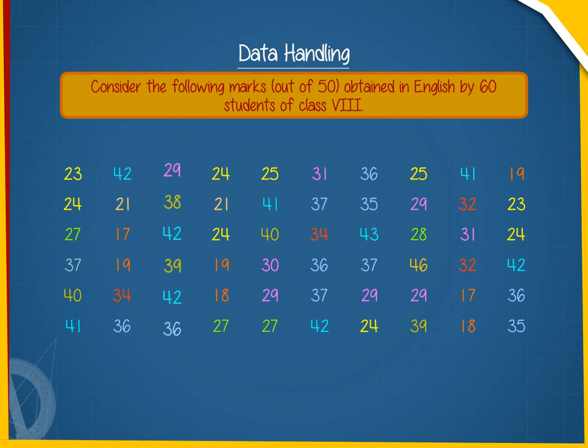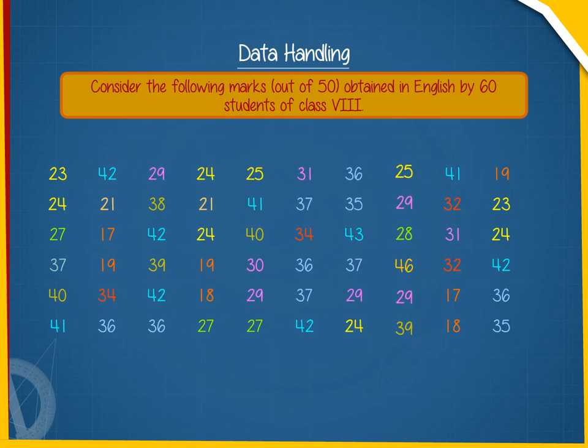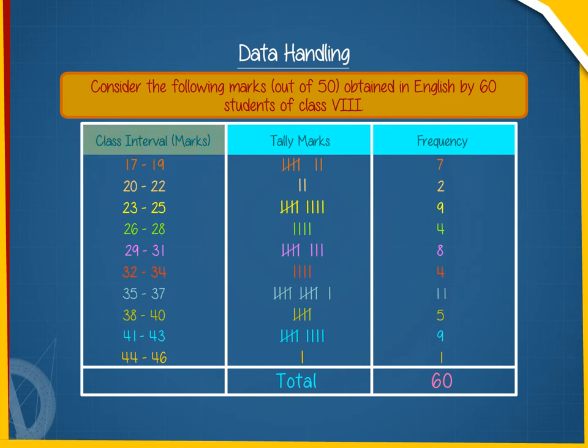So, for our convenience, we arrange these observations in groups as class interval, marks, tally marks, frequency, total.